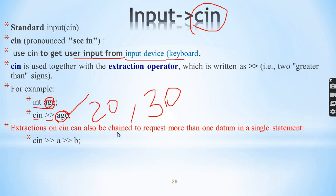Extractions on cin can also be chained to request more than one datum. For example, cin A, cin B is equivalent to cin A B, or cin extraction operator A extraction operator B.